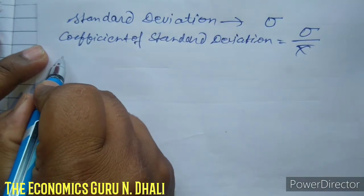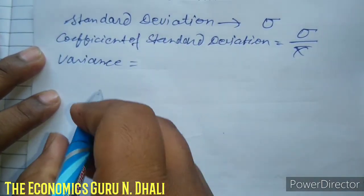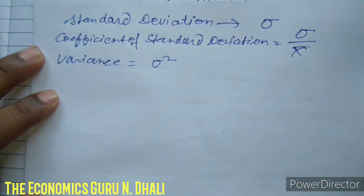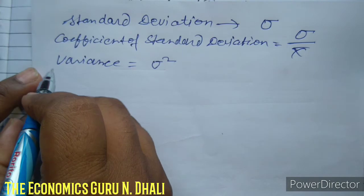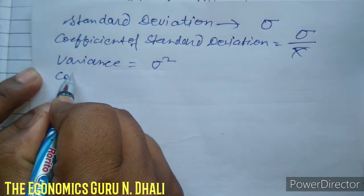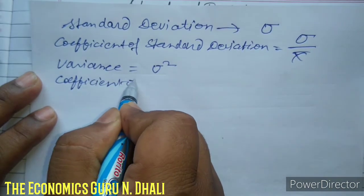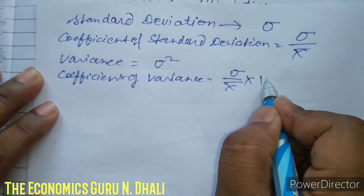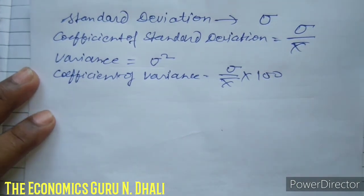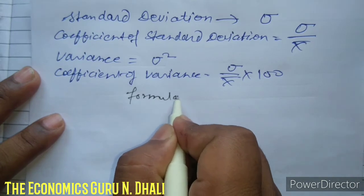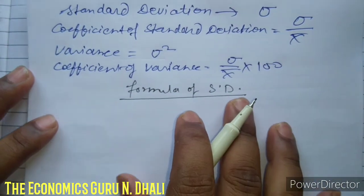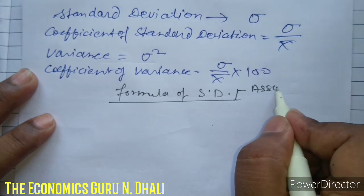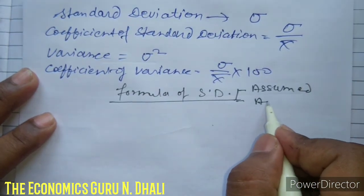Now the formula of variance. First we calculate the standard deviation and the variance. The formula of the coefficient of variance is standard deviation divided by actual mean, multiplied by 100. The standard deviation formula is discussed in two types: when we calculate by assumed mean, and when we calculate by actual mean.